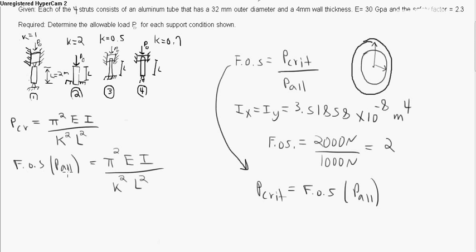And then we're going to divide both sides by the factor of safety. We divide this side by the factor of safety, they'll cancel out. We divide this side by the factor of safety, it'll go right here in the denominator.